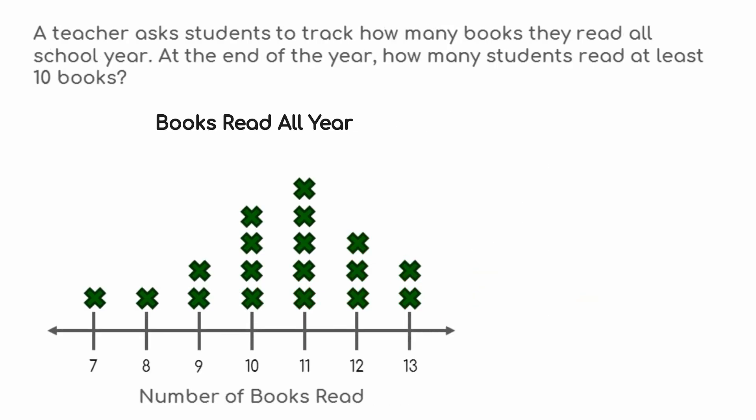A teacher asks students to track how many books they read all school year. At the end of the year, how many students read at least 10 books? The key words in the question are "at least," which means we need to look for numbers that are at least 10. We need to count all the X's in the columns for 10, 11, 12, and 13 books.